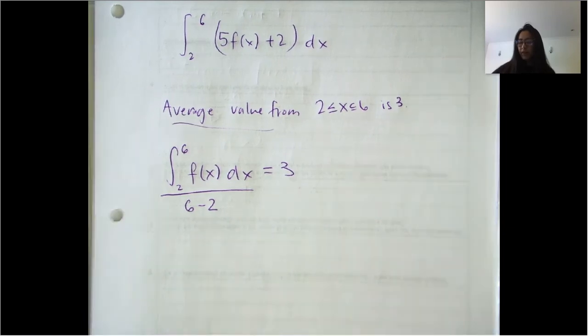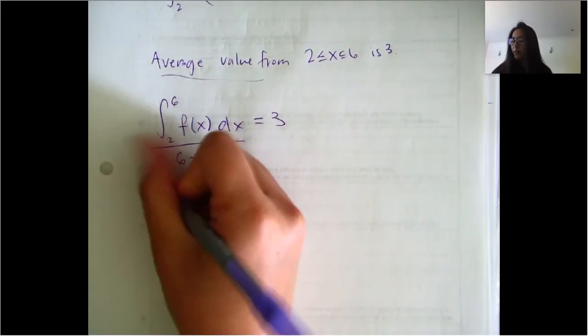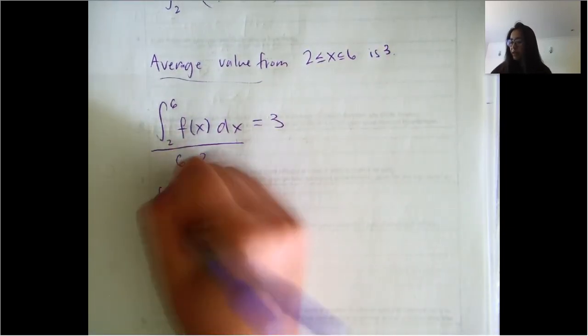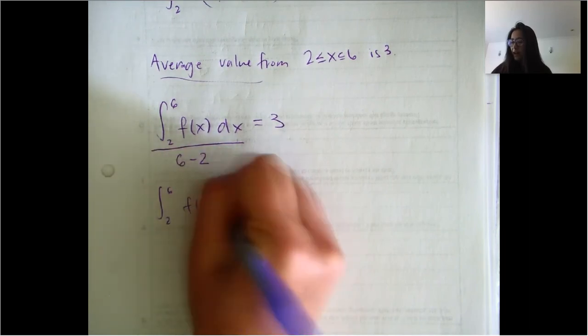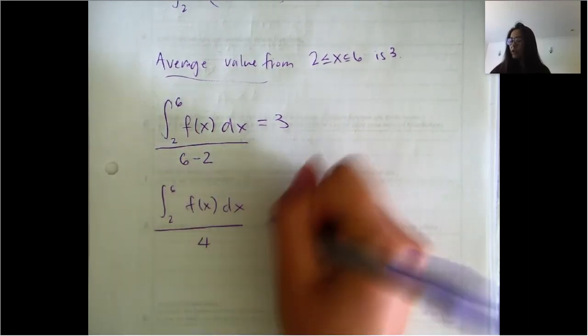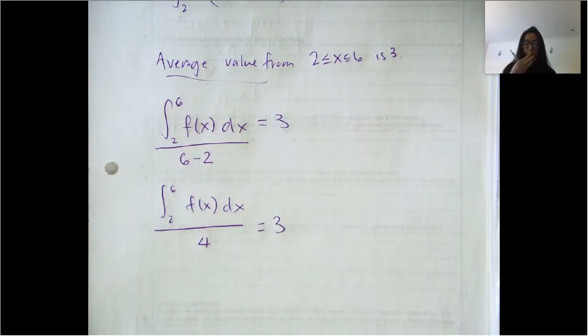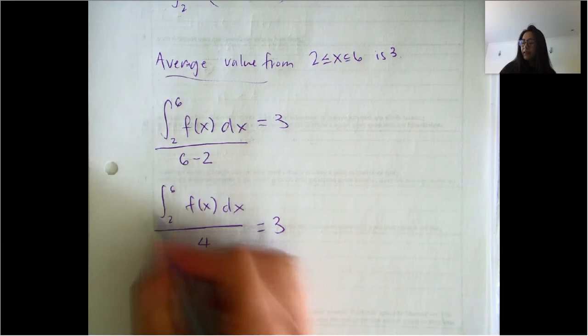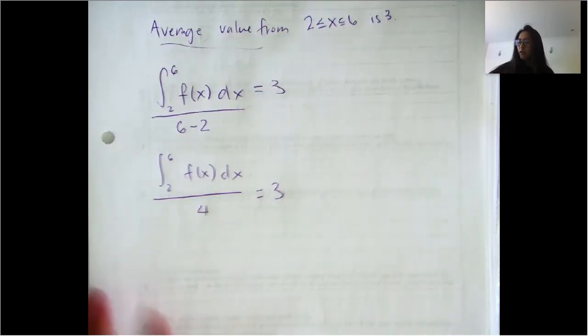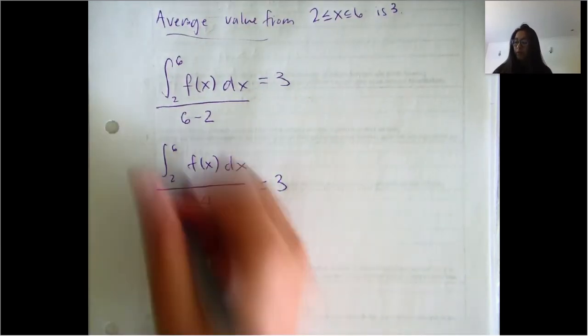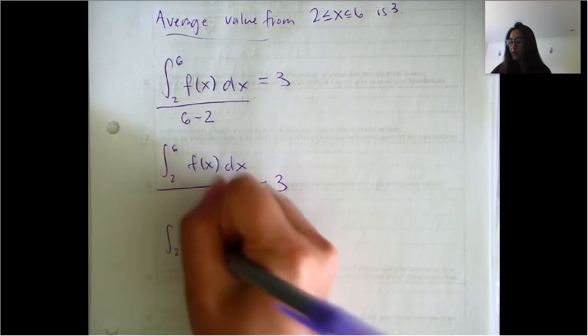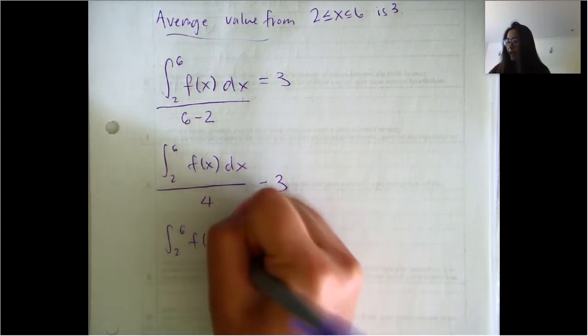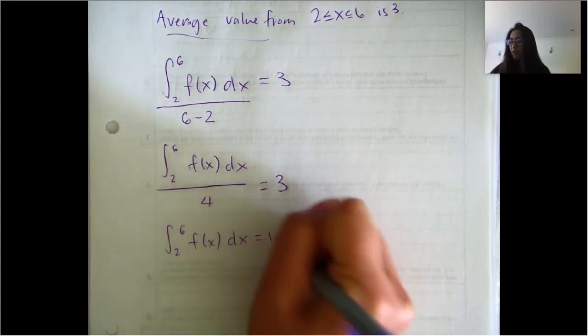So just to simplify this a little bit, what you can see is that we have the integral from two to six of F of X DX over four should equal three. So if you multiply both sides by four, you know that this integral equals 12. So if you have the integral from two to six of F of X DX, that should equal 12.